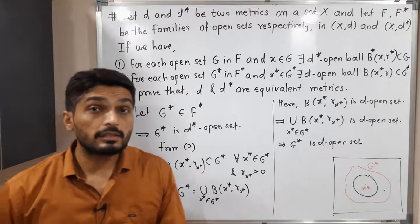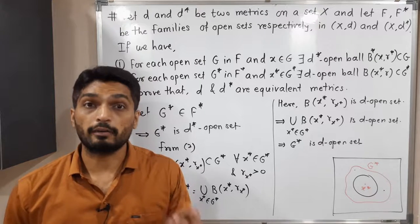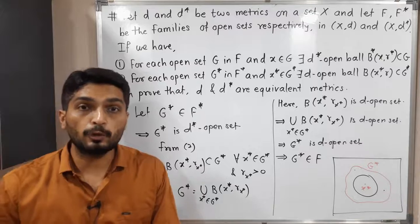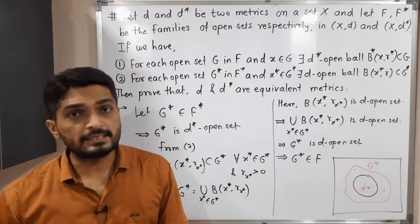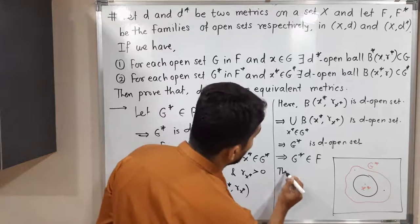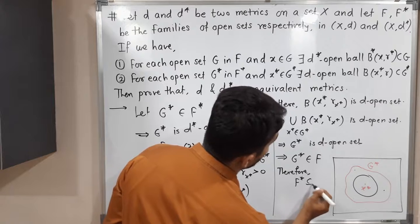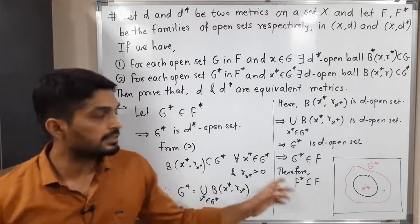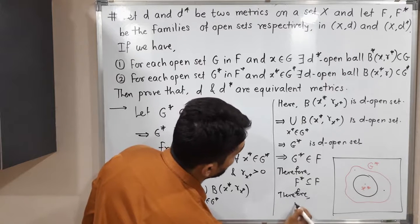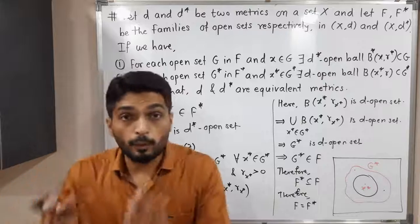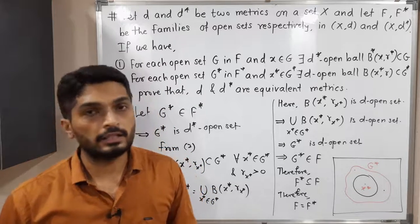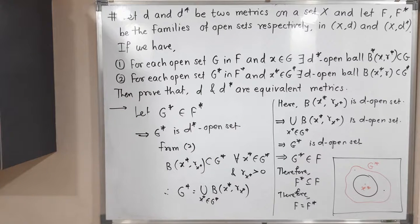Since G* is a D-open set, it should be in the family F. Since F denotes the family of D-open sets and G* is one of them, G* belongs to F. We took G* from F* and proved it is in F. Therefore F* is a subset of F. We already proved F is a subset of F*. Now F* is a subset of F. Therefore F equals F*, meaning the family of D-open sets equals the family of D*-open sets. This is the definition of equivalent metrics. Therefore D and D* are equivalent metrics.